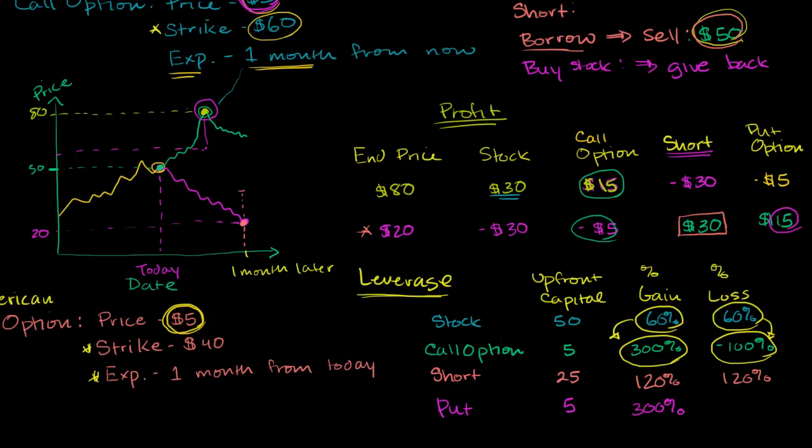And on the other side of the equation, when the stock went up, the worst we could do is just lose all of our money. So the worst thing we could do is lose 100%. So once again, we were able to multiply our gains relative to shorting. Although it's a little bit more mixed on the downside, because the put gives you a little bit of protection there.